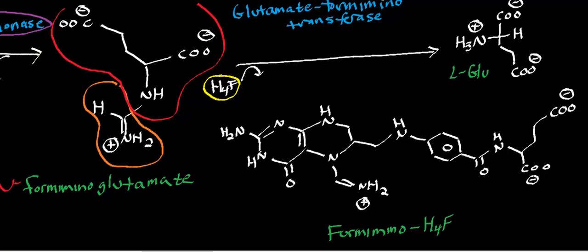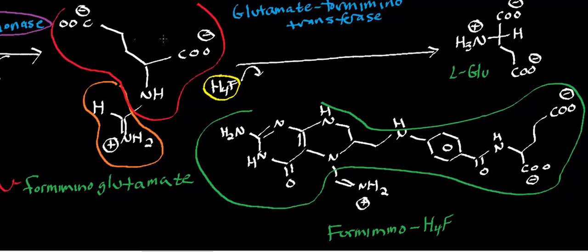What's going to happen is the formamino group on formaminoglutamate is going to get transferred onto the tetrahydrofolate. If we were going to look at the tetrahydrofolyl group, the tetrahydrofolyl group is just all this business right here. That's the tetrahydrofolate group. The thing I circled in orange, that's the formamino group. The formamino group just gets attached to this nitrogen right here.